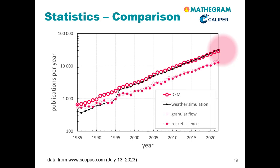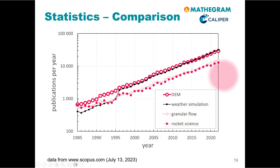We can now compare this to other disciplines, for example weather simulation, the field of granular flow, or the famous rocket science. As you can see here, the discrete element method is even more important than rocket science, and it has a similar standing as weather simulation.